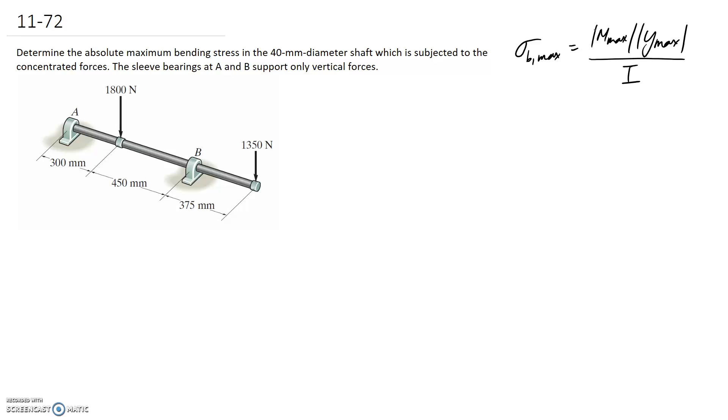I'm going to start with looking for the maximum moment, and that's going to mean that we need to draw a free body diagram in order to calculate the reactions at A and B. Drawing that in, we've got our force of 1800 newtons and our force of 1350 newtons on the end.